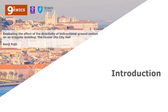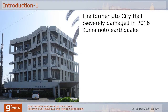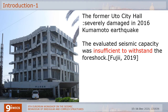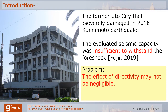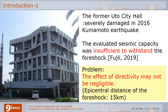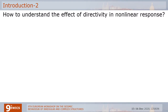Let me start from the introduction. The former Uto City Hall, shown in this photo, was severely damaged in the 2016 Kumamoto earthquake. The seismic capacity of this building evaluated in a previous study was insufficient to withstand the foreshock. However, there remain some problems. One of the problems is that the effect of directivity may not be negligible. The epicentral distance of the foreshock was 15 kilometers, while in the previous study, the effect of directivity was not considered for the seismic capacity evaluation. So, how to understand the effect of directivity in the nonlinear response?